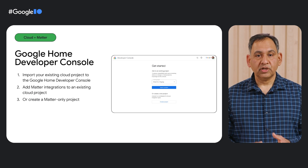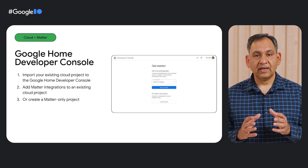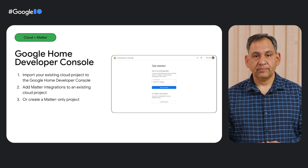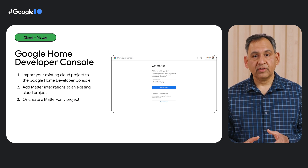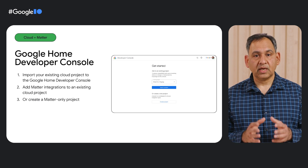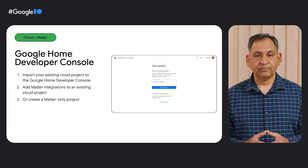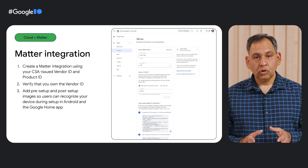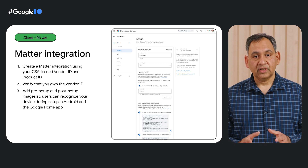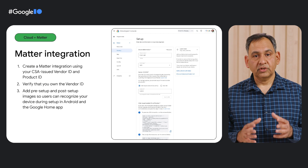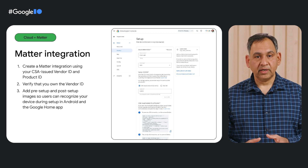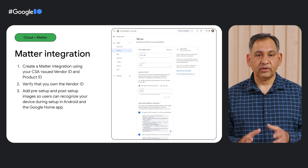In the new Google Home Developer Console, import and add your existing cloud project. If you don't have any prior cloud projects, you can always create a standalone Matter-only project. Google Home Developer Console lets you set up your Matter project with a CSA-issued vendor ID and product ID, and a tool to automatically verify your vendor ID.